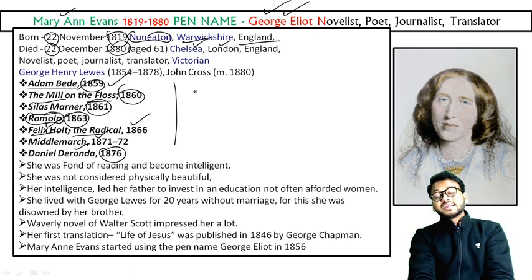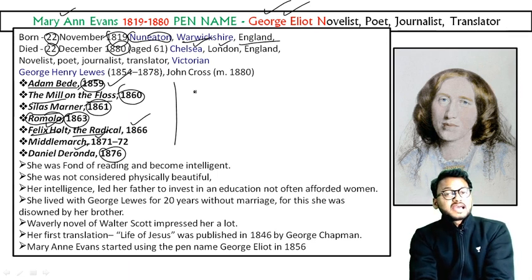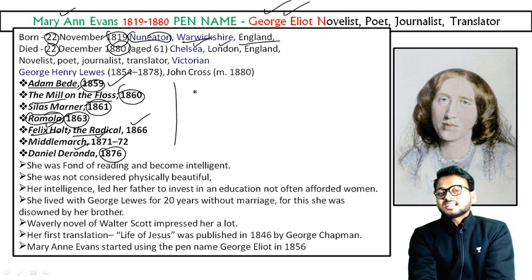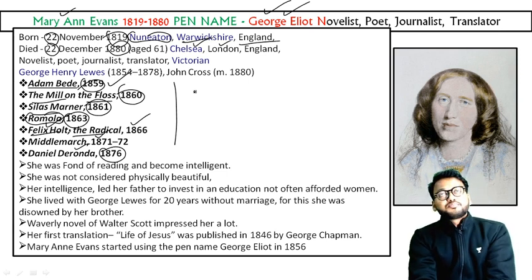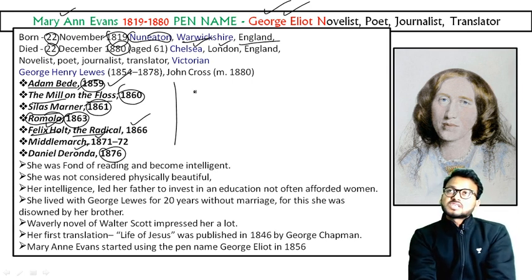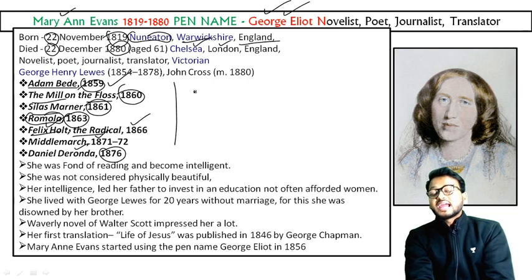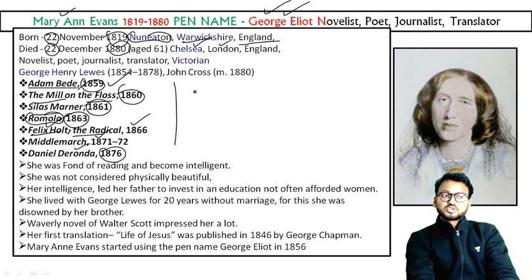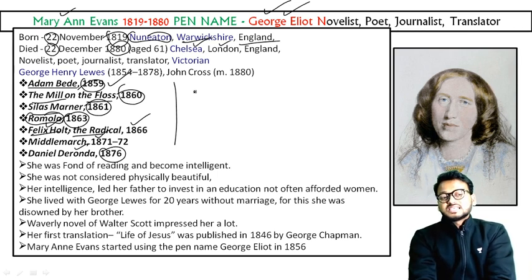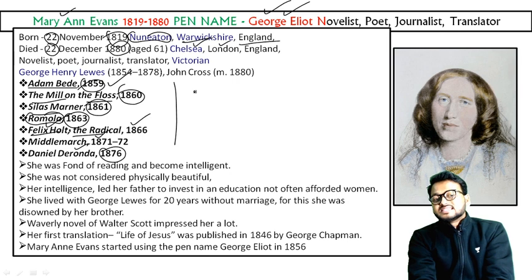Another reason is that she was neglected by her family — even her brother neglected her and said he was not going to accept her as his sister. Her father Robert Evans was also outside the home. Even she was not considered physically beautiful, so she knew no one was going to accept her. She turned to reading and became intelligent through her love of books.